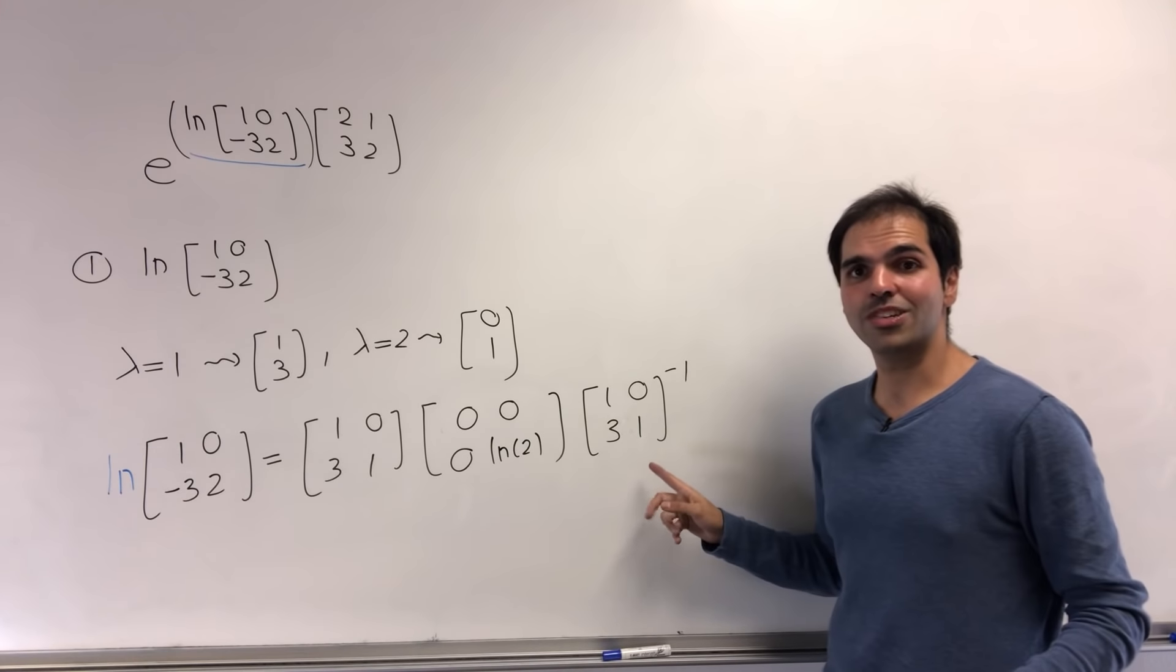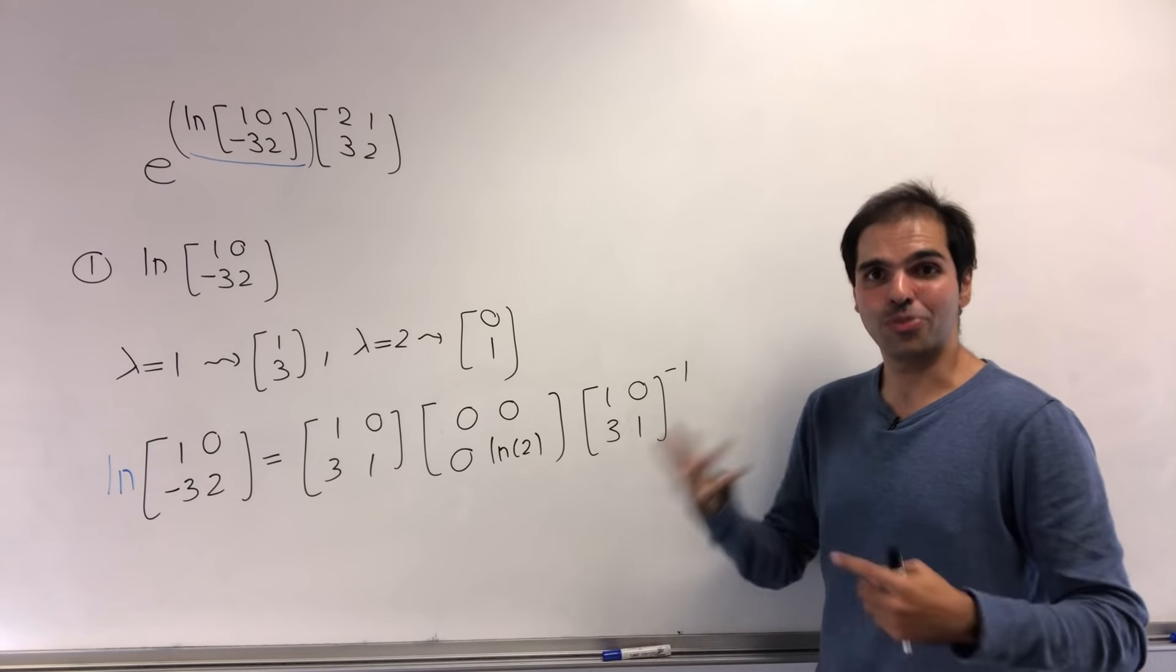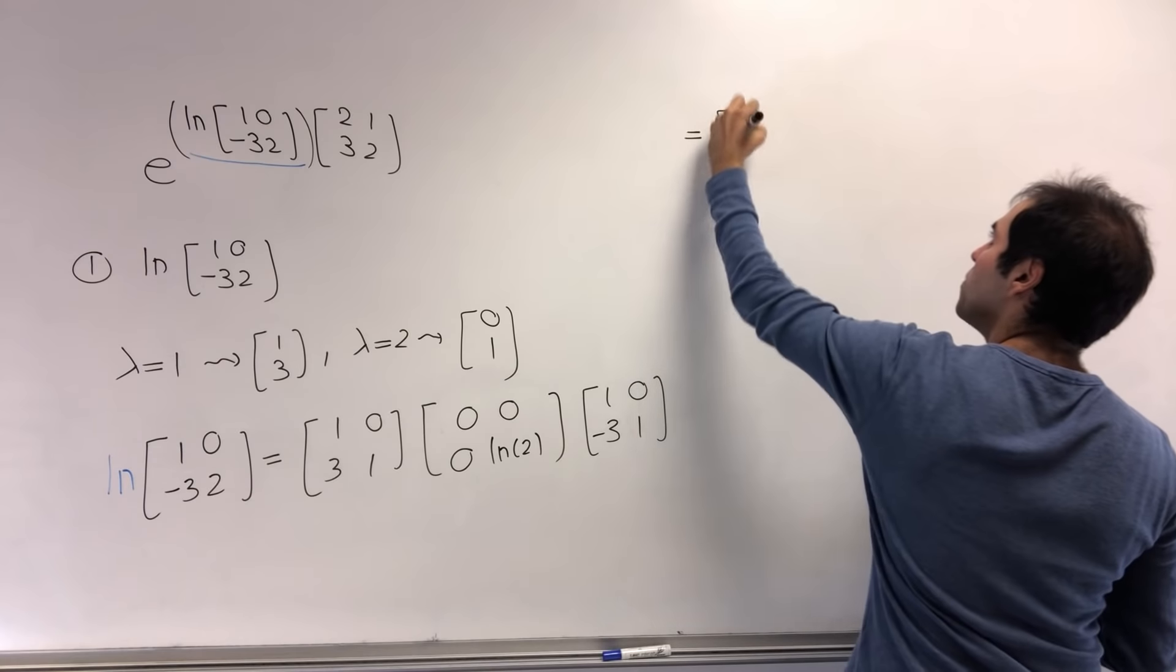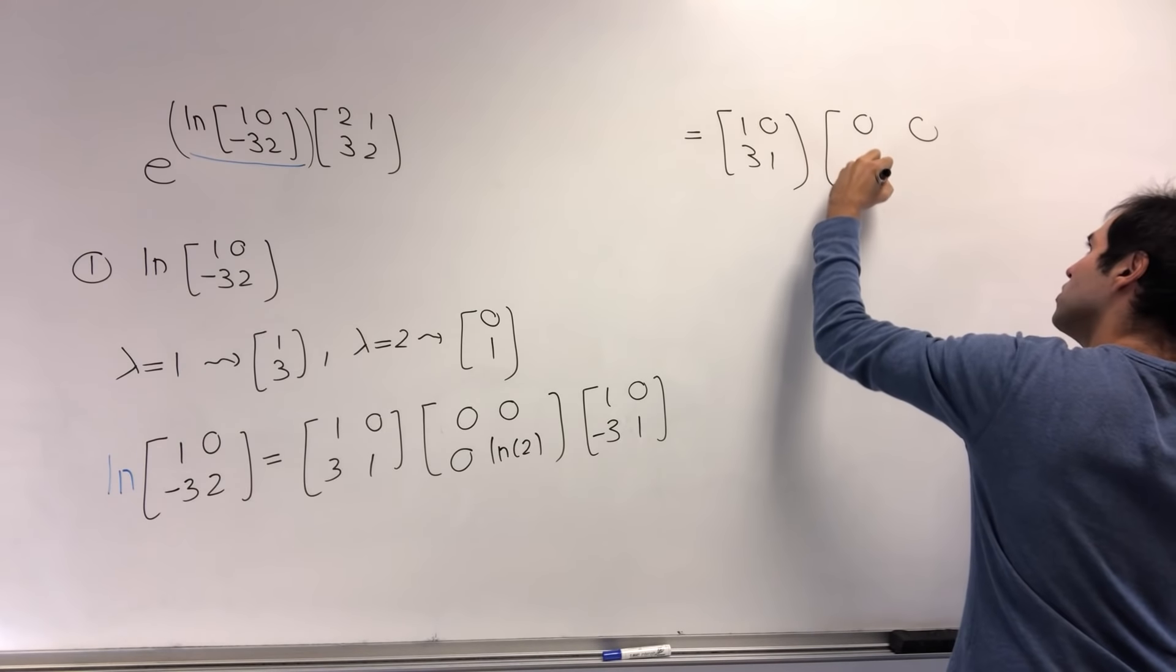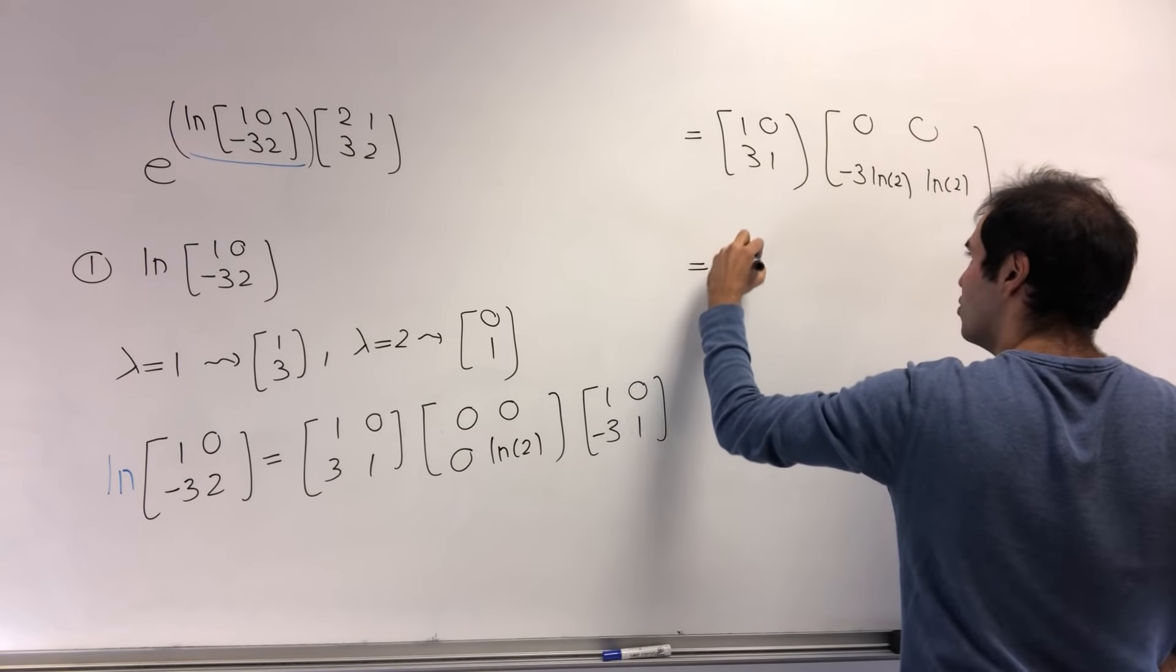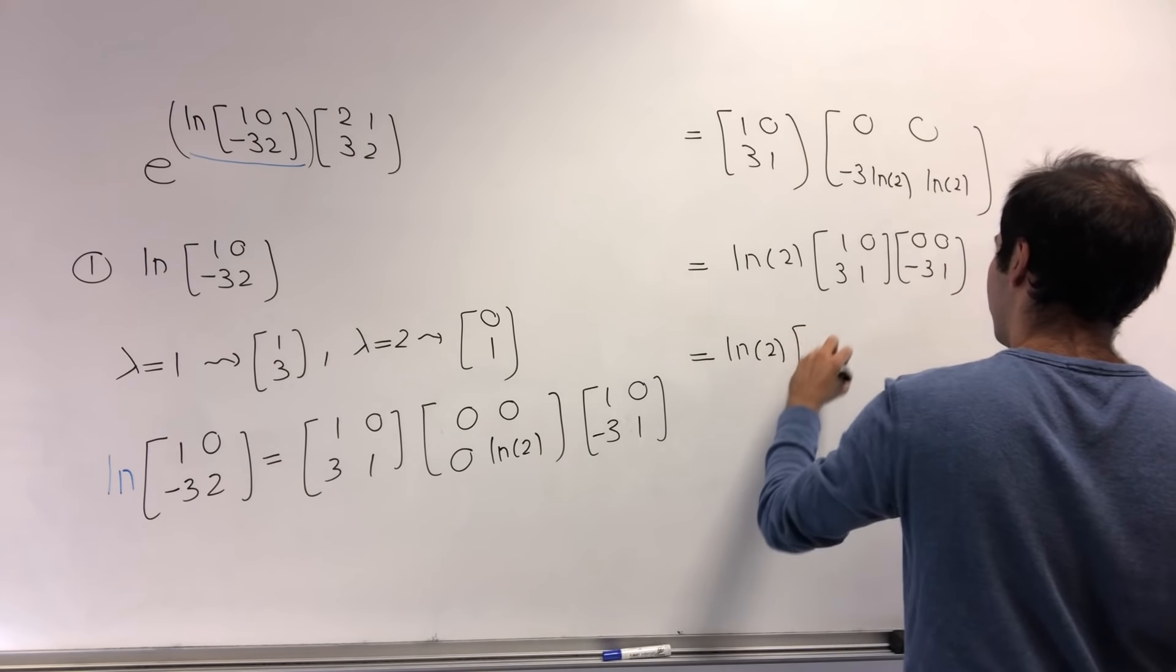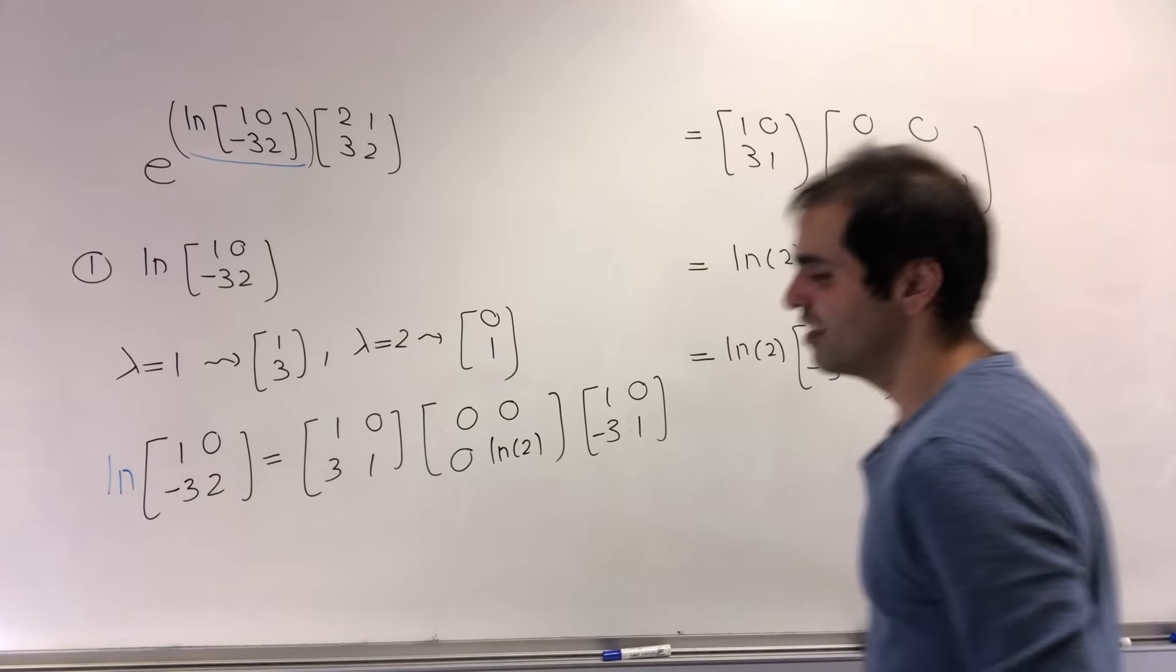All right, and then what is the inverse of this matrix? Again, not too bad, because this means add three times the first row to the second row. So to undo this, you subtract three times the first row to the second row. So it's just 1, 0, minus 3, 1. And then you calculate this, so this then becomes 1, 0, 3, 1, and then 0, 0, minus 3, ln of 2. Which, if you want, shows ln of 2 times 1, 0, 3, 1, and then 0, 0, minus 3, 1. And you calculate that, so this becomes ln of 2. And I think you get 0, 0, and believe it or not, the same matrix, 0, 0, minus 3, 1.